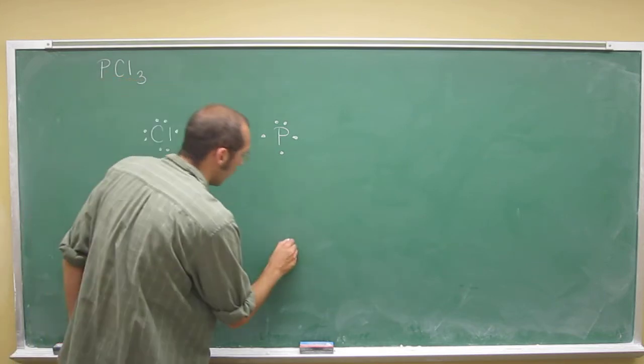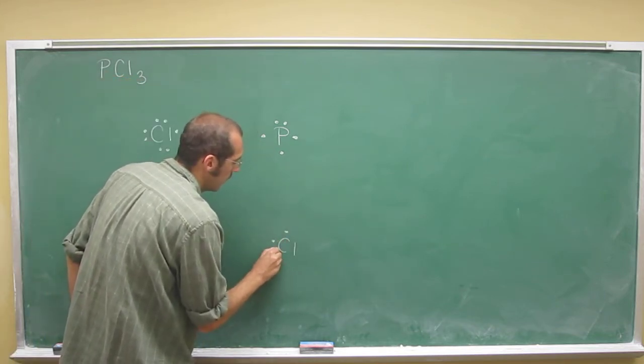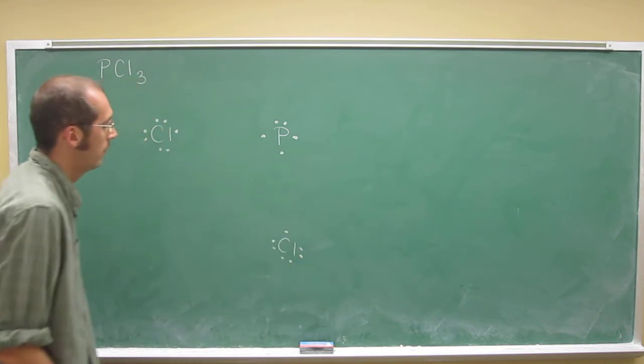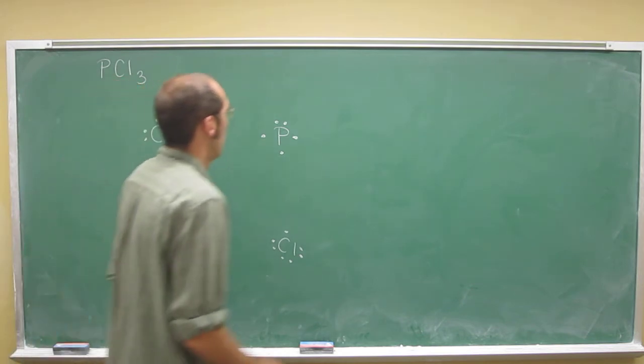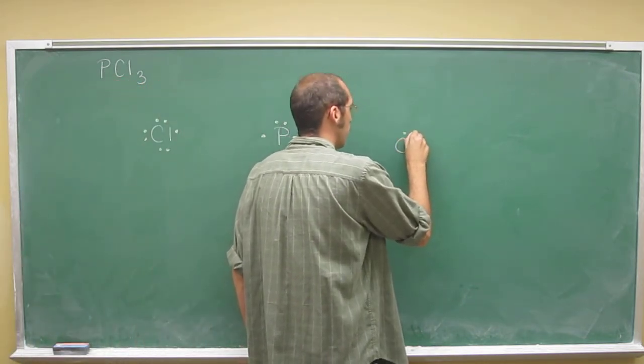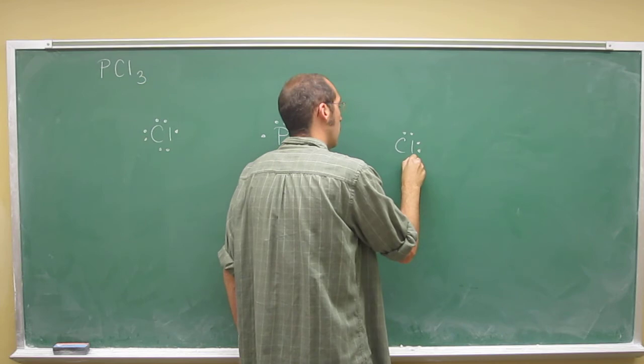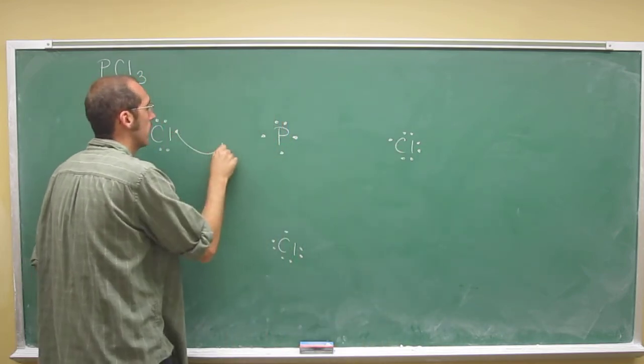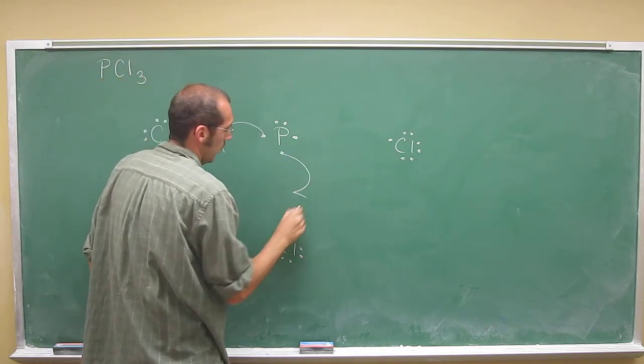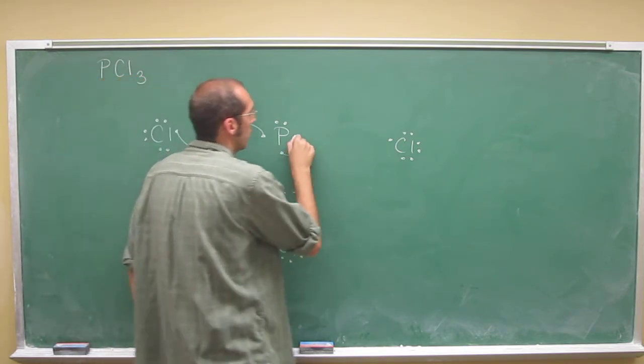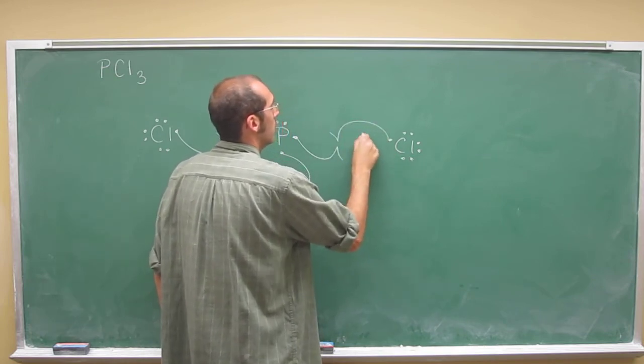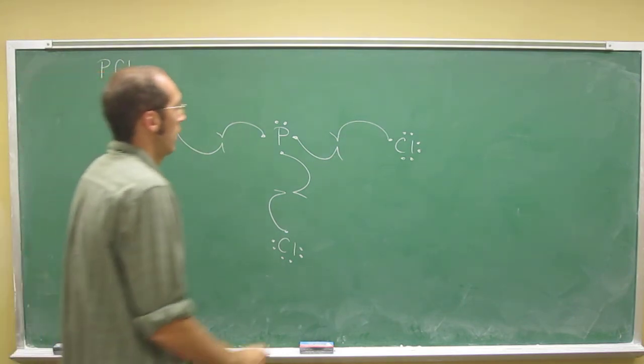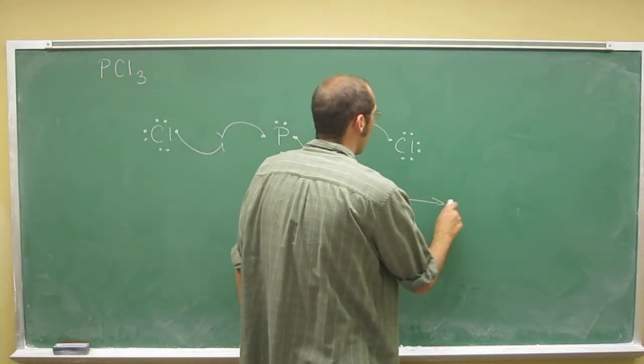Because remember, I'm going to make those fish hook arrows. So again, I'm just putting that one empty spot, empty orbital, next to the phosphorus atom. Like that. And then I'm going to draw my fish hook arrows.